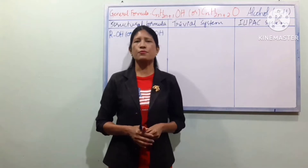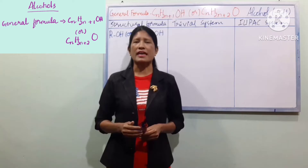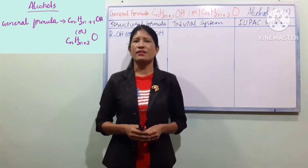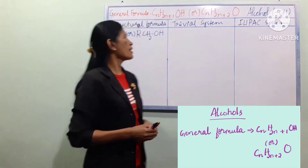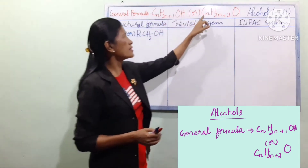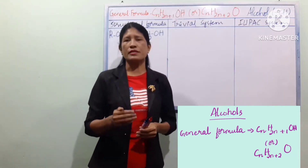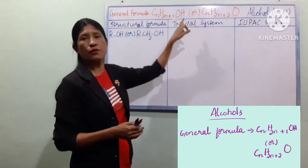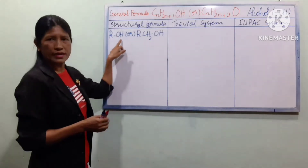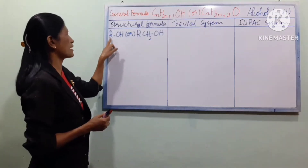The first thing is the general formula CnH2n+1OH. The formula of the alcohol is CnH2n+1OH, or CnH2n+2O. We have to look at this simple N. For the functional group, OH. We will look at CnH2n+y, and the structure R-O-H.